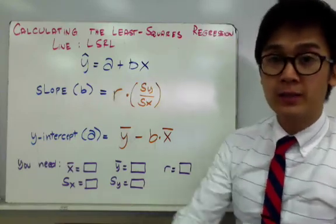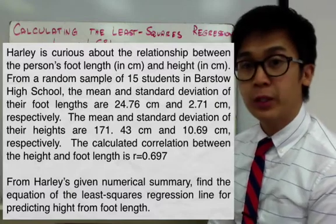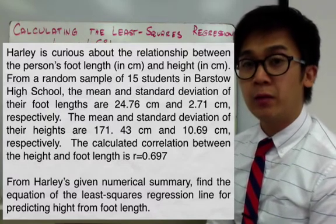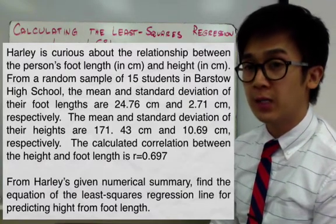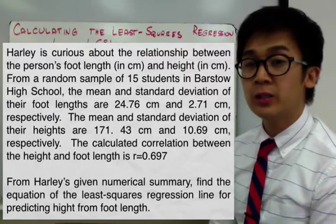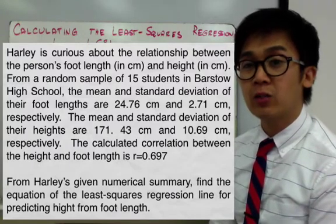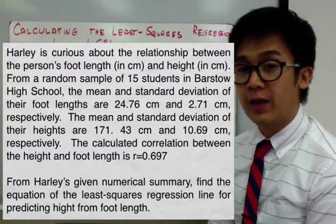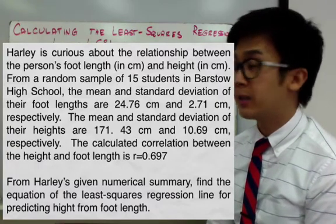For this problem, Harley is curious about the relationship between a person's foot length in centimeters and height in centimeters. From a random sample of 15 students at Barstow High School, the mean and standard deviation of their foot lengths are 24.76 cm and 2.71 cm, respectively. The mean and standard deviation of their heights are 171.43 cm and 10.69 cm, respectively. The calculated correlation is r equal to 0.697. Given these values, we'll find the equation of the least squares regression line for predicting height given foot length.